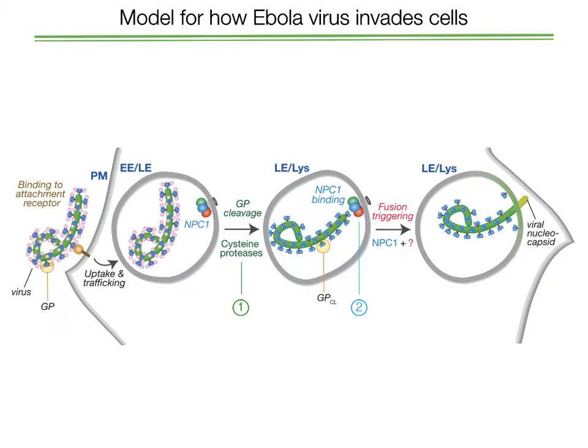The cysteine proteases that Ebola needs in order to bind to NPC1, and NPC1 itself, are two potential therapeutic targets. We think of these host components almost like a GPS system that you use to navigate from one place to another. The virus is using these host molecules to orient itself during the invasion process, and if we take away the ability of the virus to exploit these host molecules, the virus is essentially lost and cannot successfully escape into the cell.